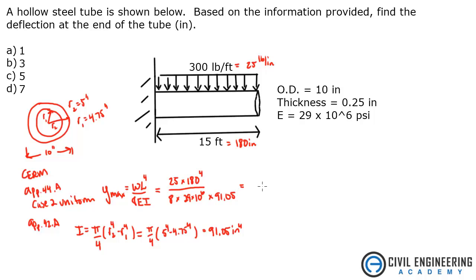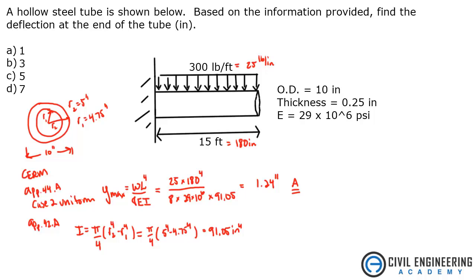So what do I get? Y max — I get 1.24 inches as the maximum deflection. The answer looks like it is A. I hope that helped you out. This is a good structures problem. They will probably ask something like this where you're going to need to use the appendix or the AISC manual to look up the max deflections for different scenarios. Head to Civil Engineering Academy for more tips and tricks related to the PE exam. Thanks.